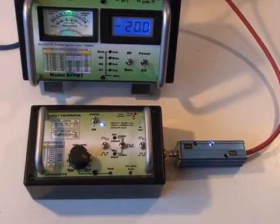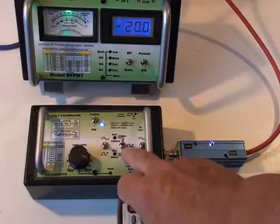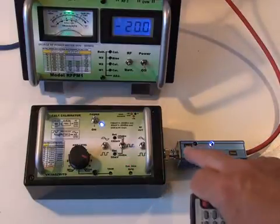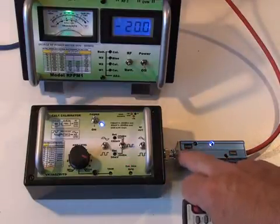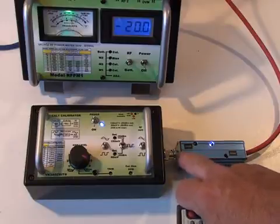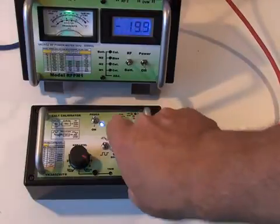The VK3AQZ calibrator puts out a square wave signal of known output power. In this case, minus 20 dBm. It also has a switch for a level of minus 30 dBm.